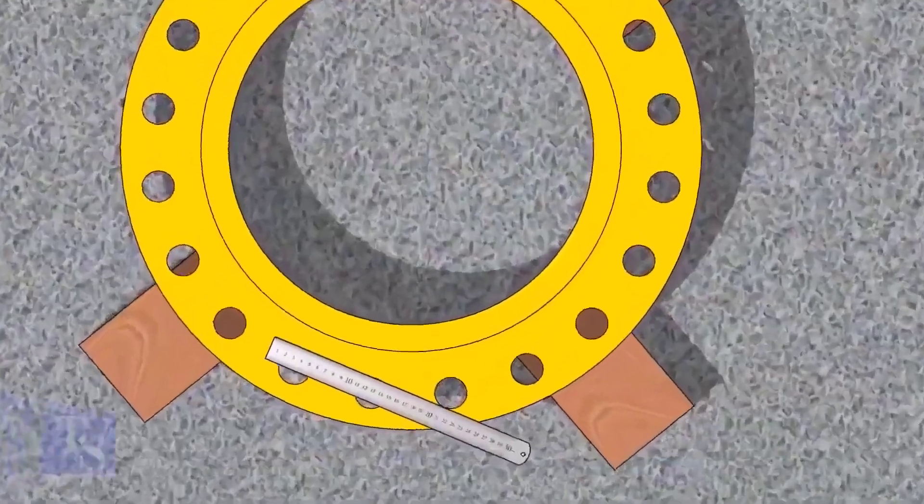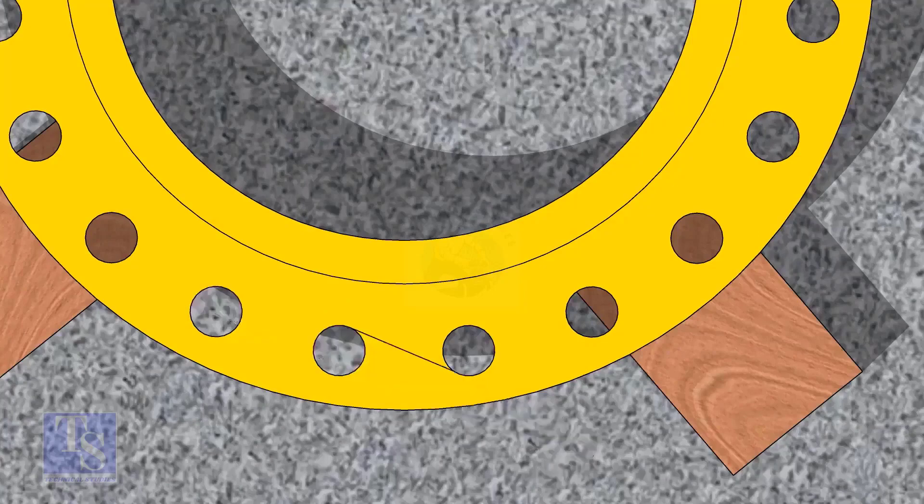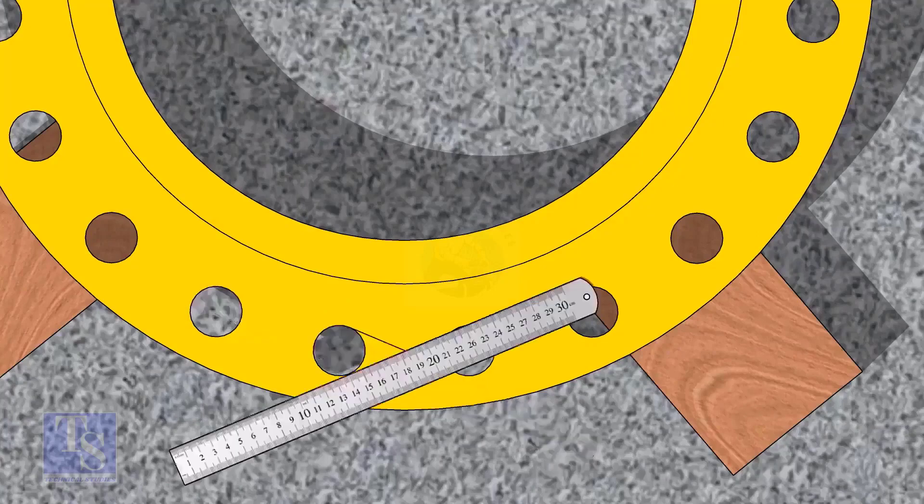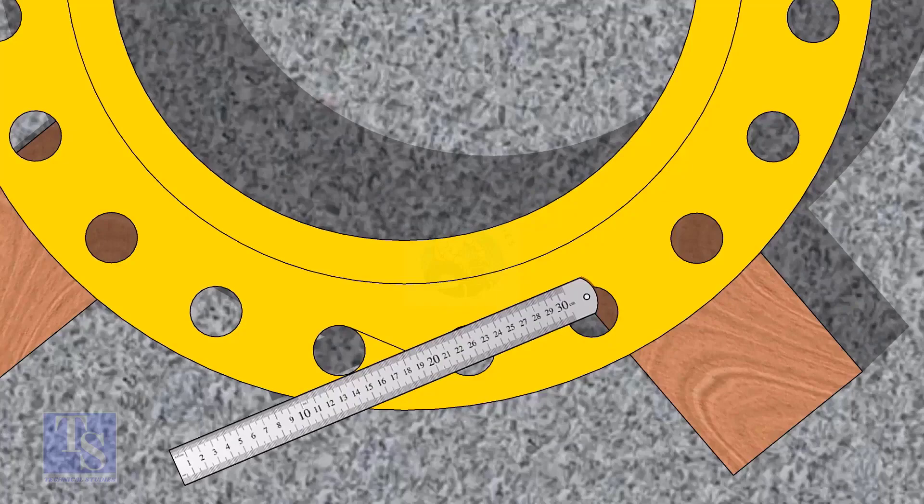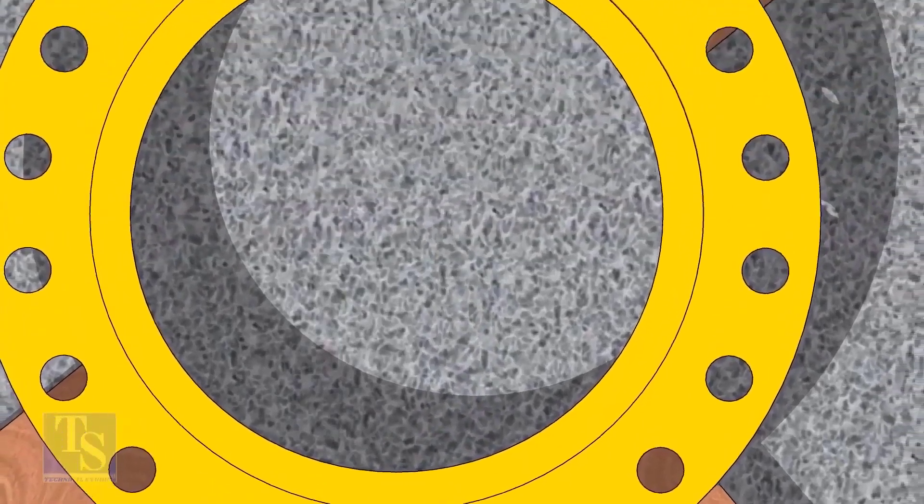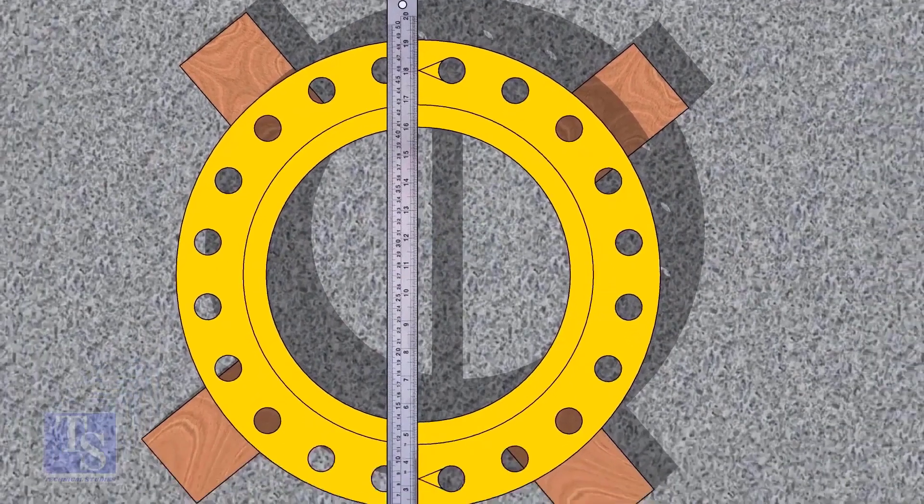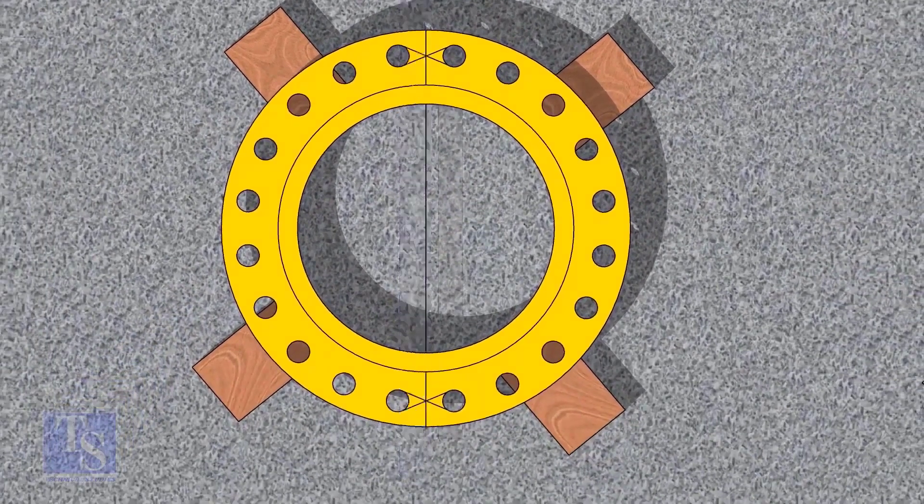Let us mark the center line of the flange. Draw tangential lines of two adjacent holes. The intersection of the lines is the center of these holes. Draw the center of the two holes on the opposite side. Draw the center line of the flange as shown.